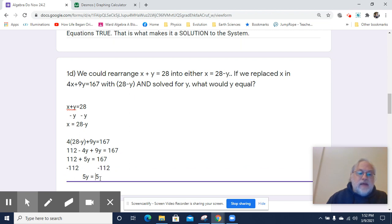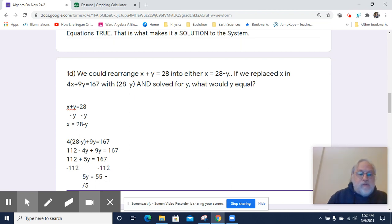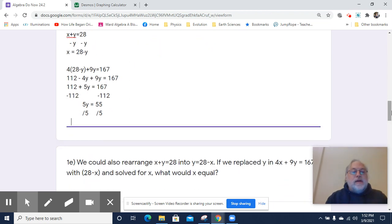7 minus 2 is 5. 60 minus 10 is going to be 50. And 100 minus 100 is nothing. So 5Y equals 55. I'll divide both sides by 5. And Y will equal 11.